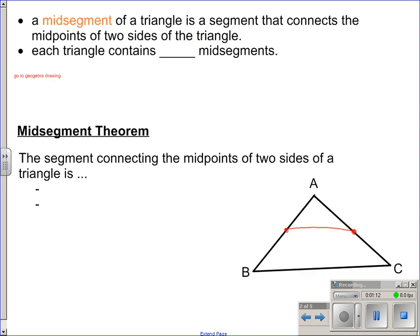Now, there is an empty line up here. It says each triangle contains blank number of midsegments. If I put the midpoint of segment BC here, connect the midpoints, there is another midsegment. Connect these two midpoints, this triangle has three midsegments. Every triangle will have three midsegments. Now, we are going to talk just about one at a time, so we can get rid of that one and this one. Just talk about one midsegment at a time.